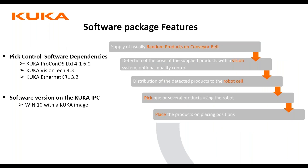Some of the software features in our PIC control, depending on which version you pick, include Proconose. Proconose runtime comes on every single software version of PIC control and helps with the execution of PLC applications. Vision Tech is our vision software, which comes with PIC Control Vision. Ethernet KRL is also used for Vision Tech if you want to interact with it. When it comes to the KUKA IPC, it comes with Windows 10 and a KUKA image. The benefit is that configuration settings — including time sensing and network configuration — are already set up and ready to go.